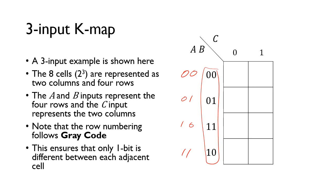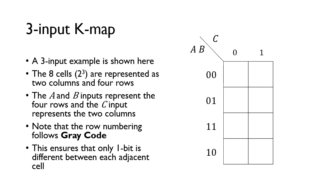Using Grey code ensures that only 1 bit changes on each row. With normal binary code, as we go from 1 to 2, both bits change. But with Grey code, only one bit changes at a time — this bit changes, then this bit changes, then this bit changes. It's very important to remember to number the rows using Grey code to ensure that the cells are only ever different by one bit.